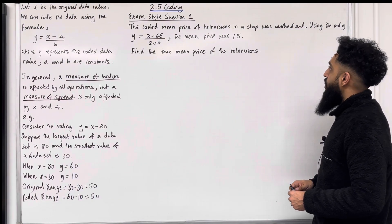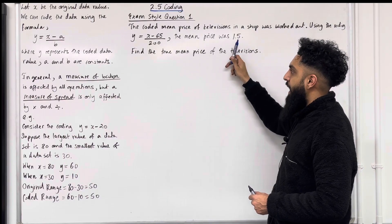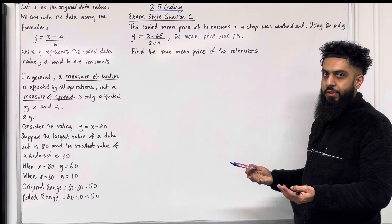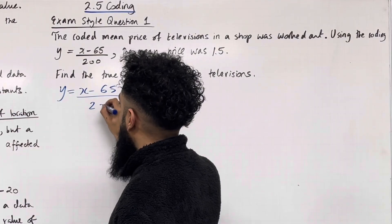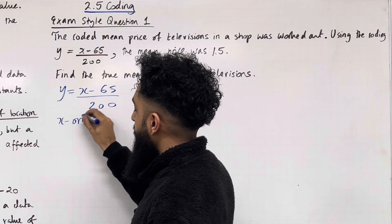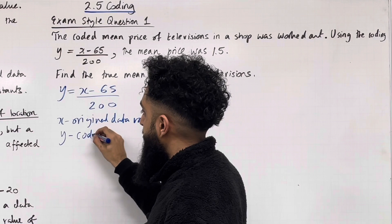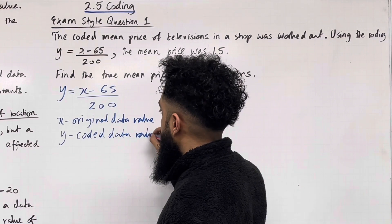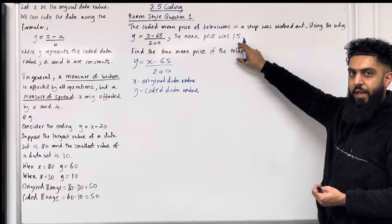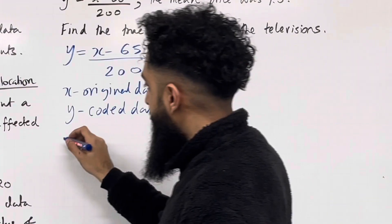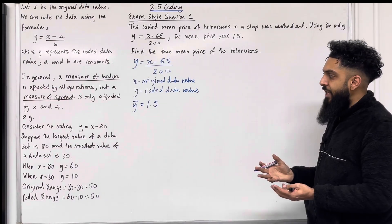The coded mean price of televisions in a shop was worked out using the coding y equals x minus 65 over 200. The mean price was 1.5. Find the true mean price of the televisions. So we have the coding y equals x minus 65 over 200, where x represents the original data value and y represents the coded data value. The coded mean is y-bar equals 1.5. We are trying to work out x-bar.